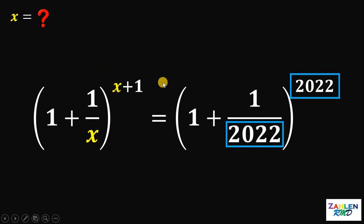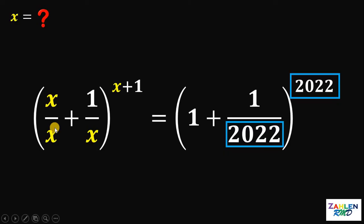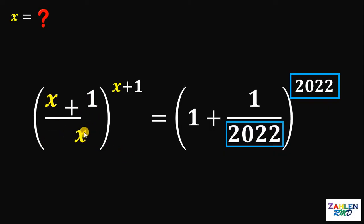To achieve our goal, we're going to replace this 1 with x over x. Now, x divided by x is just 1. Since we have the same denominator, we can add x over x and 1 over x, which gives us x plus 1 over x.